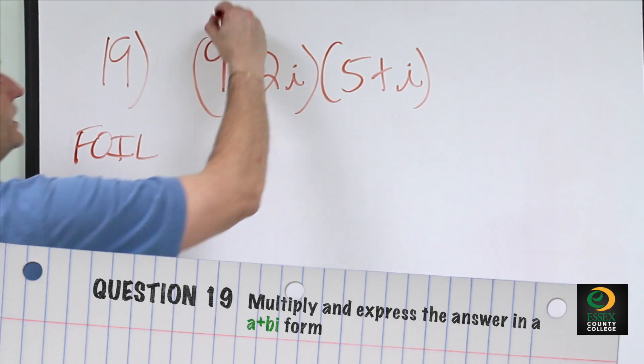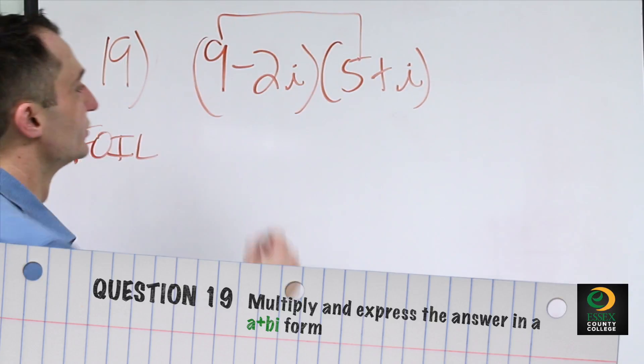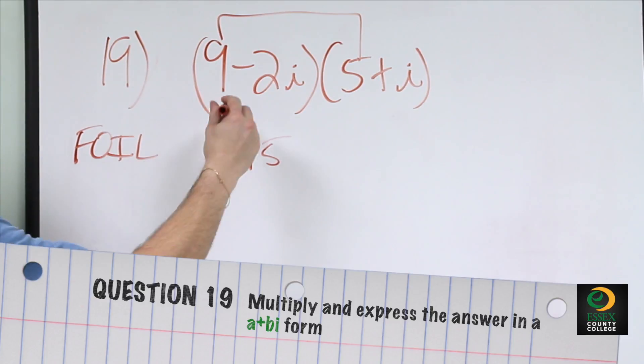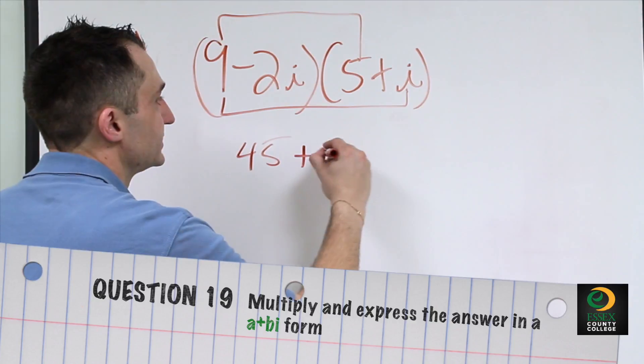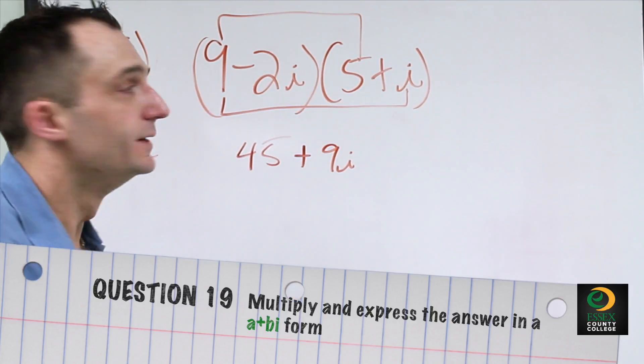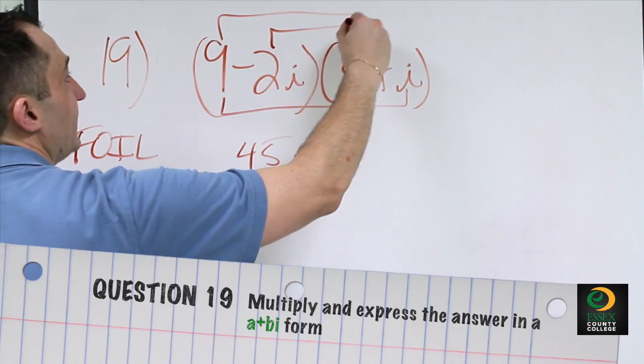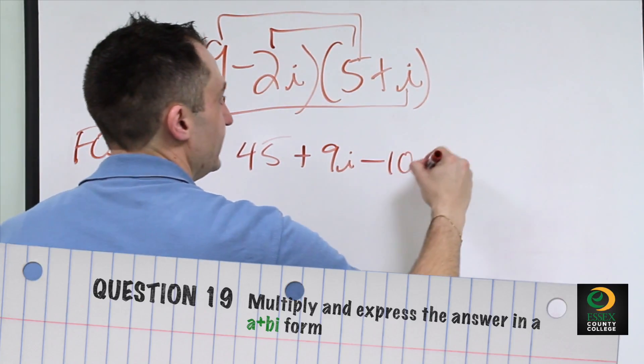The first is 9 times 5, which gives us 45. The outer becomes 9 times i, which is plus 9i. Then we do negative 2i times 5, which becomes negative 10i.